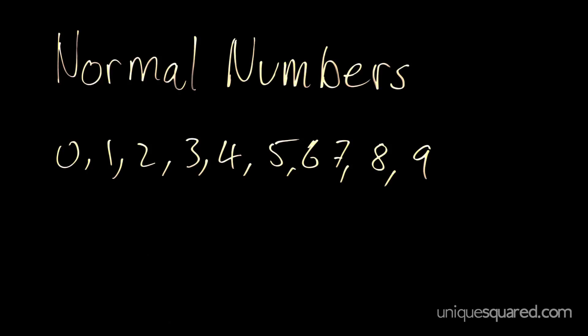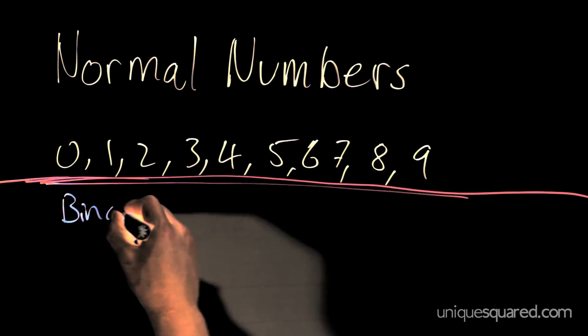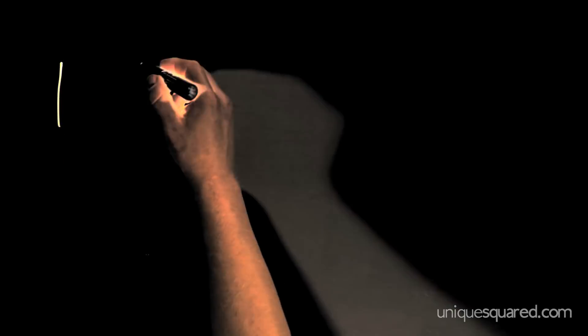And with those numbers, we can create any number we could possibly think of. But, in binary, there are only two numbers, 1 and 0. We can also use binary to write any possible number we can think of, but how does it look? Well, it's a string of numbers just like regular numbers, except with only 1s and 0s.